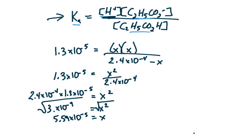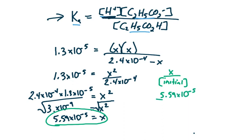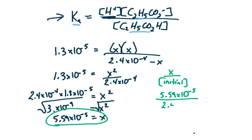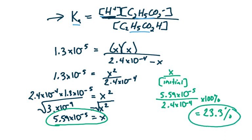Before we move on, let's check if the approximation is valid. We take X divided by the initial concentration: 5.59 times 10 to the minus 5 divided by 2.4 times 10 to the minus 4, multiplied by 100%, which gives us 23.3%. This is too high — the change in concentration is 23.3% of the initial concentration, which is outside our 5% threshold. We cannot use the approximation method in this case.